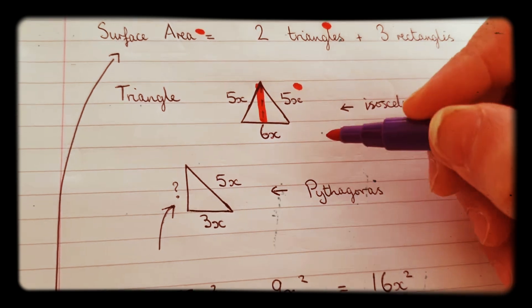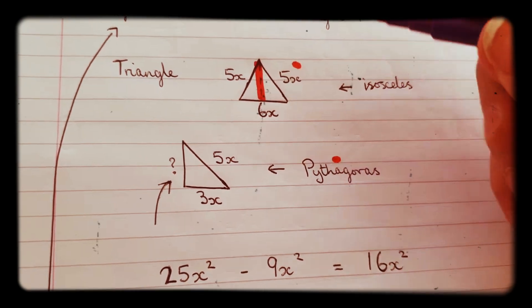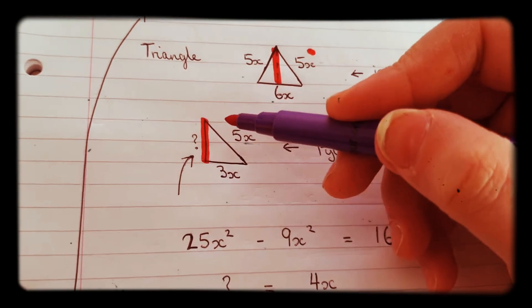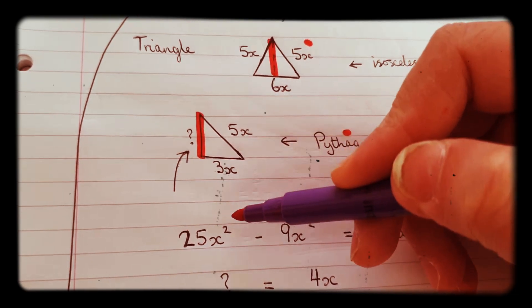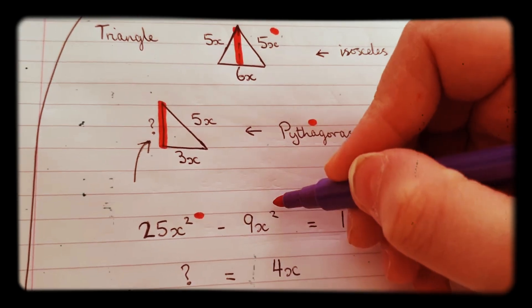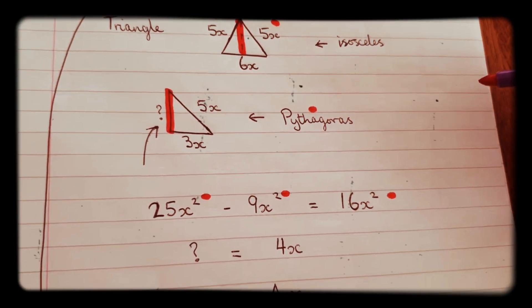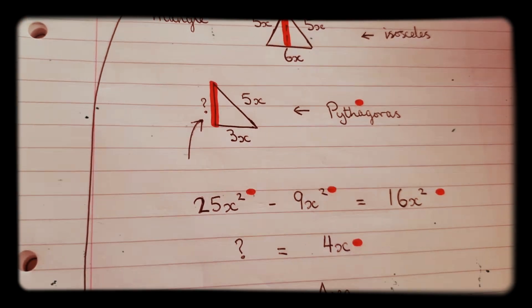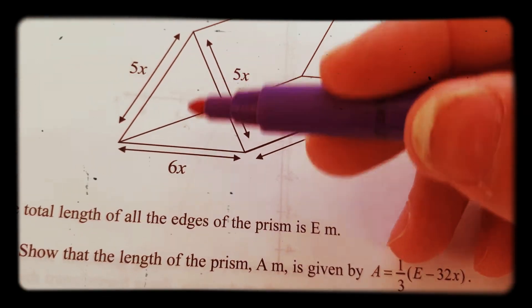So what we do is we use Pythagoras - we split this isosceles triangle into two and we find out the height of that. Using Pythagoras, we use this side here: 5x squared makes 25x squared minus that side there which is 9x squared, and that will give 16x squared. We square root that and we'll get 4x, so that side there is 4x using Pythagoras. So we know now that the height of that triangle is 4x.